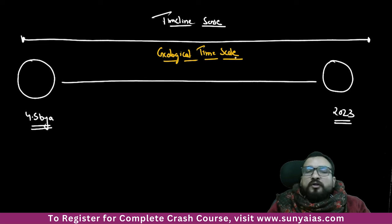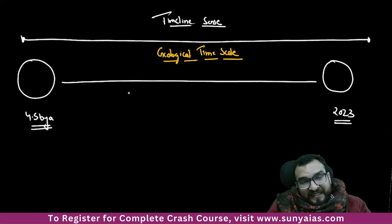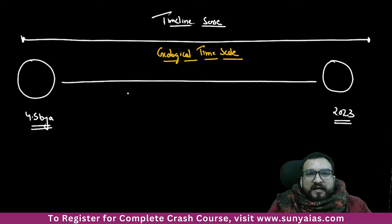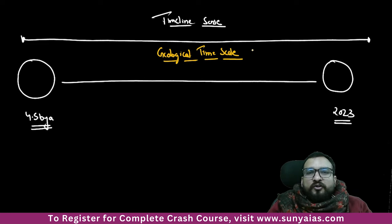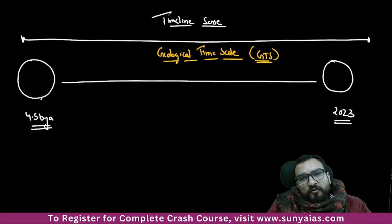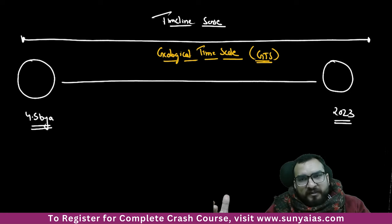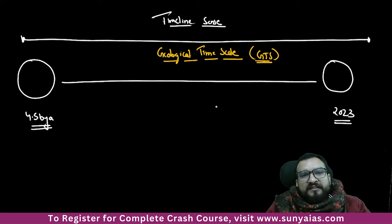This Geological Time Scale is a concept from geography, but I am teaching it from the historical perspective because timeline is very important. The earth was formed 4.5 billion years ago, and since then certain geological processes have been taking place. Various species of humans and dinosaurs have appeared, and right now we are in 2023.